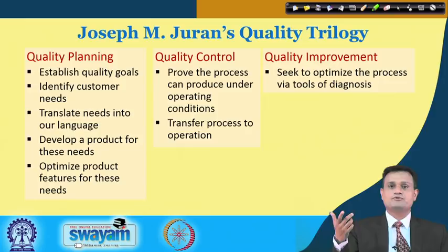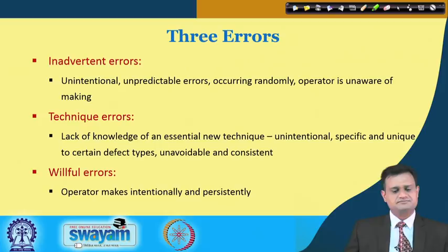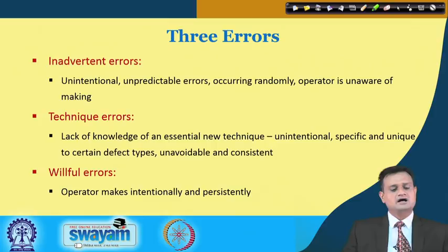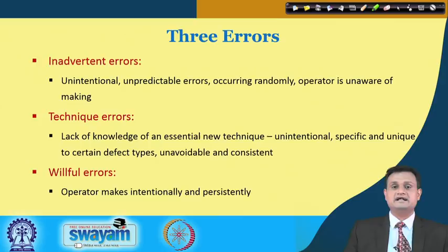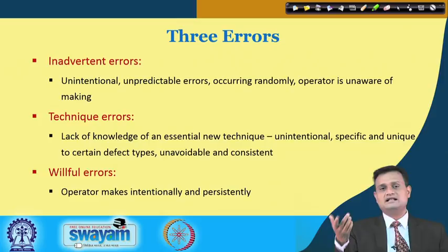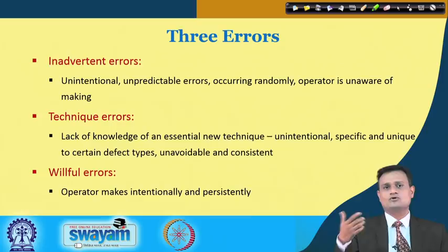Juran identified three types of errors. Inadvertent error: unintentional, unpredictable errors occurring randomly — the operator is unaware of such errors. Technique error: lack of knowledge of an essential new technique — unintentional, specific and unique to certain defect types, unavoidable and consistent. These errors are mainly because of lack of knowledge and can only be rectified by improving training or awareness of new methodology.